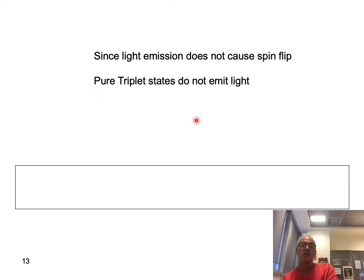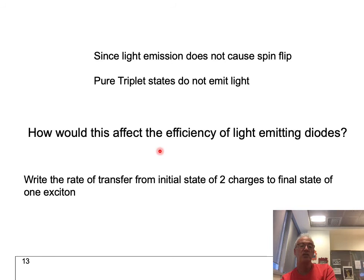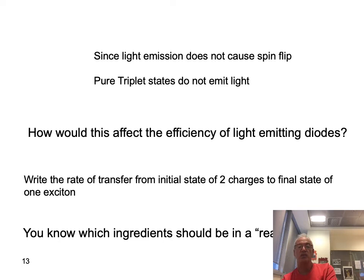A pure triplet state would not emit light since light emission is not a mechanism that causes a spin flip. We'll be interested in the effect on light-emitting diodes, so we need to know more about how excitons are generated in them. For now, one can simply write the rate equation describing the transfer from the initial state of two charges on two molecules to the final state where both reside on one, and this gives a notion of how triplets may affect the efficiency of light-emitting diodes.